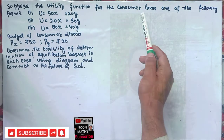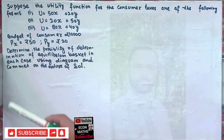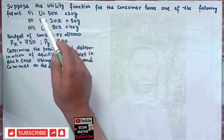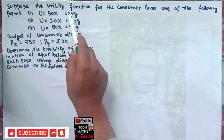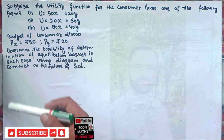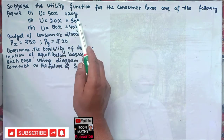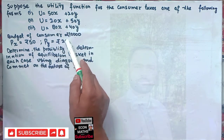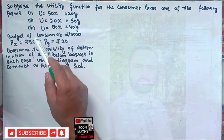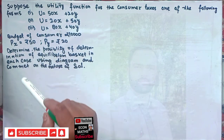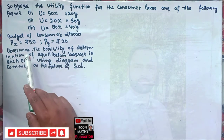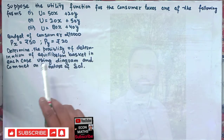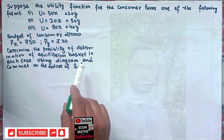Suppose the utility function for the consumer takes one of the following forms. We are given three different types of utility functions: first is U = 50x + 20y, where x and y are the two goods; second is 20x + 50y; third is 80x + 40y. The budget of the consumer is 10,000 rupees, price of good x is 50 rupees, and price of good y is 20 rupees. Determine the possibility of equilibrium basket in each case using a diagram and comment on the nature of the solution.